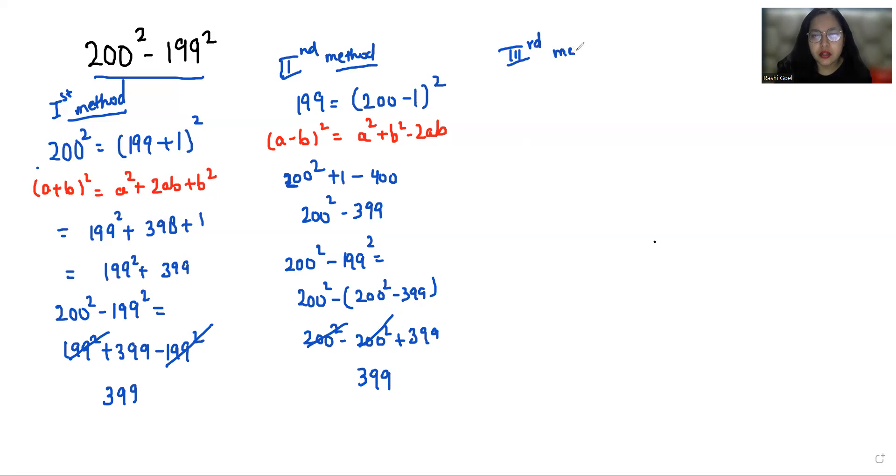Now third method. Here we can write 200 square minus 199 square. Here I am going to use identity a square minus b square which is equals to a plus b times a minus b.